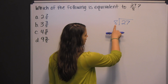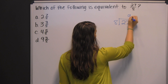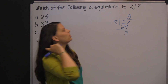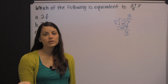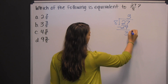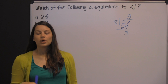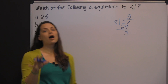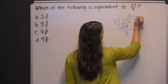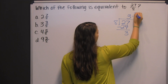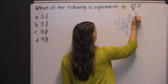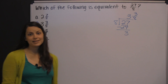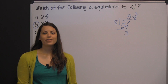First, we need to figure out how many times eight goes into twenty-seven — that's three times. Eight times three is twenty-four; you subtract and get three as your remainder. We're not trying to get a decimal, we're trying to get a mixed number, so you stop at the remainder. Take that remainder as your numerator and the divisor as your denominator. That's it — three and three-eighths.